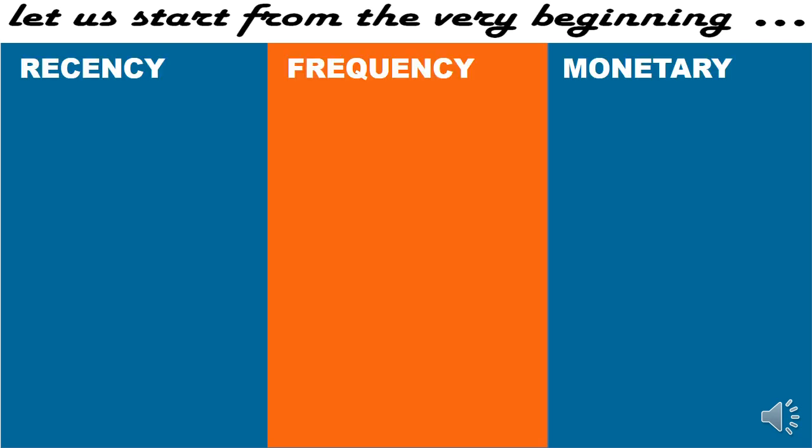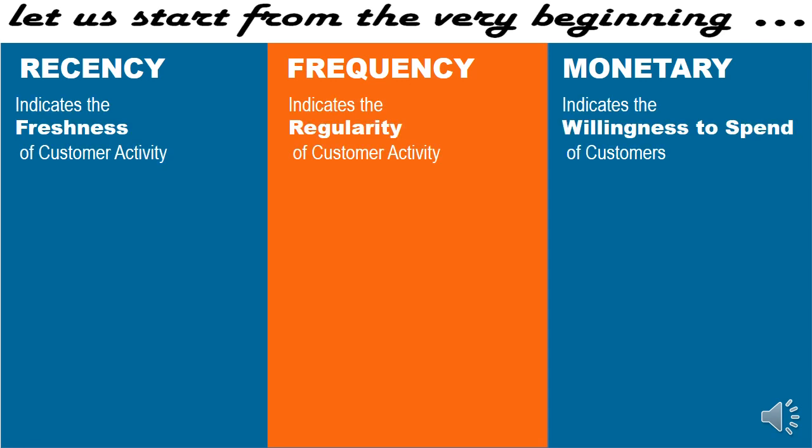Let us start from the very beginning. If you remember my previous video on segments versus clusters, segmentation is the beginning of marketing, and understanding consumer behavior means understanding the behavior of individual small segments with different buying tastes. RFM is one such segmentation tool. Let us define recency, frequency, and monetary. Recency indicates the freshness of a customer's activity. Frequency indicates the regularity of a customer's activity. And monetary indicates the willingness to spend of a given customer.